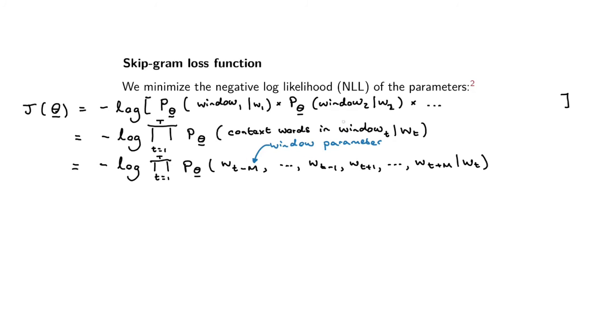We've got the word at t minus m, then the word t minus m plus one, and so on up to the word just before the center word, then the word just after the center word up to t plus m - the very last word in our context window, and then our center word wt.